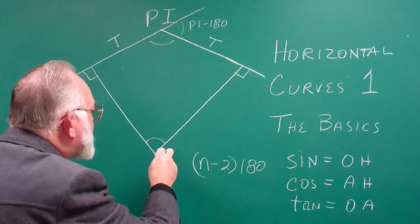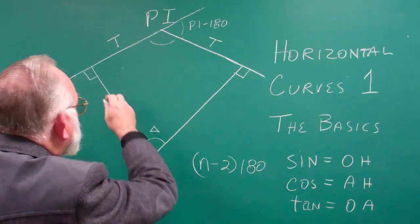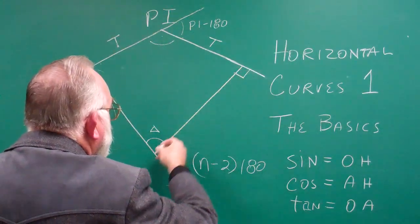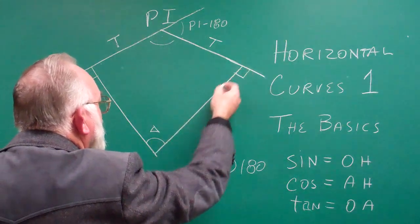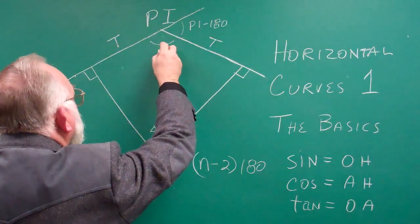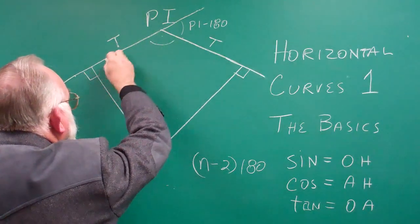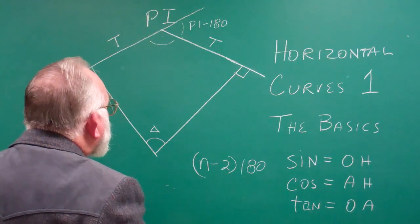Now we call this one the delta angle. And that's all that is, is the angle of the intersection of the two radius points coming at a tangent from the point of intersection, or from these right angles to these two tangents.